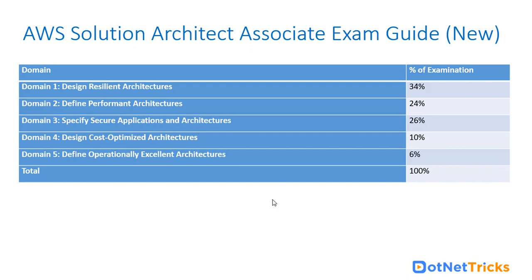Relax — till August 2018 both the certification exams, based on the new and old exam guides, will remain available. If you have started afresh, we recommend that you follow the new exam guide. If you are already preparing, you can go for the old exam. Your certification will still remain relevant, considered as good as new, and it will carry the same expiry time limit of two years for any AWS certification exam. In the new exam guide, the focus is on five domains instead of four.